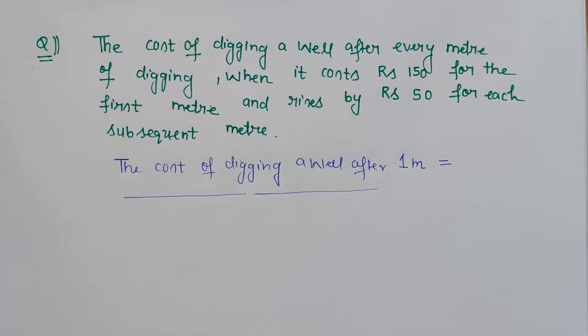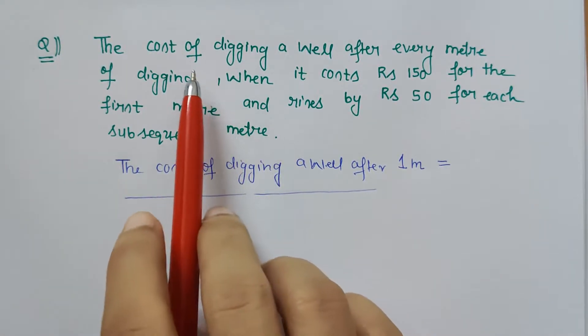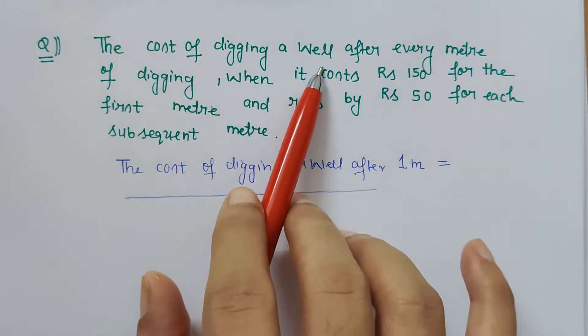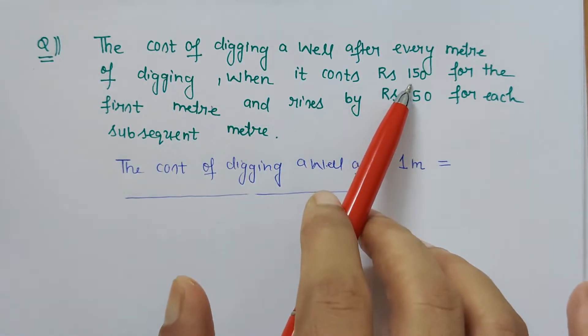Hello friends, in this question we have to check if the given situation forms an AP or not. The question is: the cost of digging a well after every meter of digging when it costs rupees 150 for the first meter.